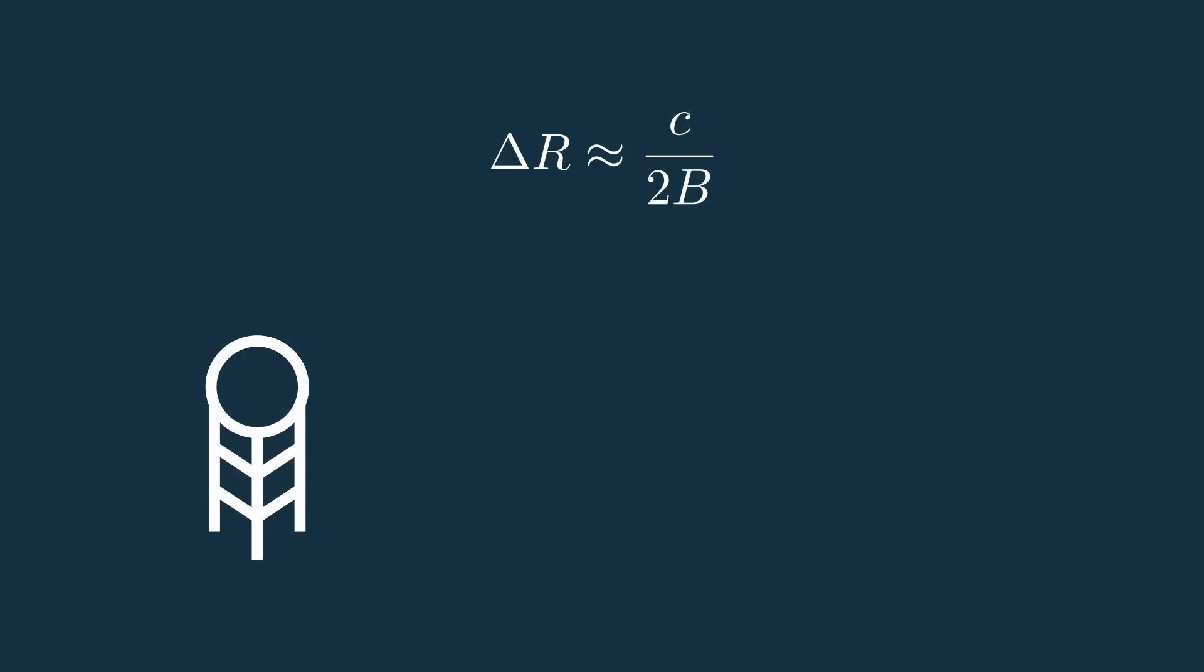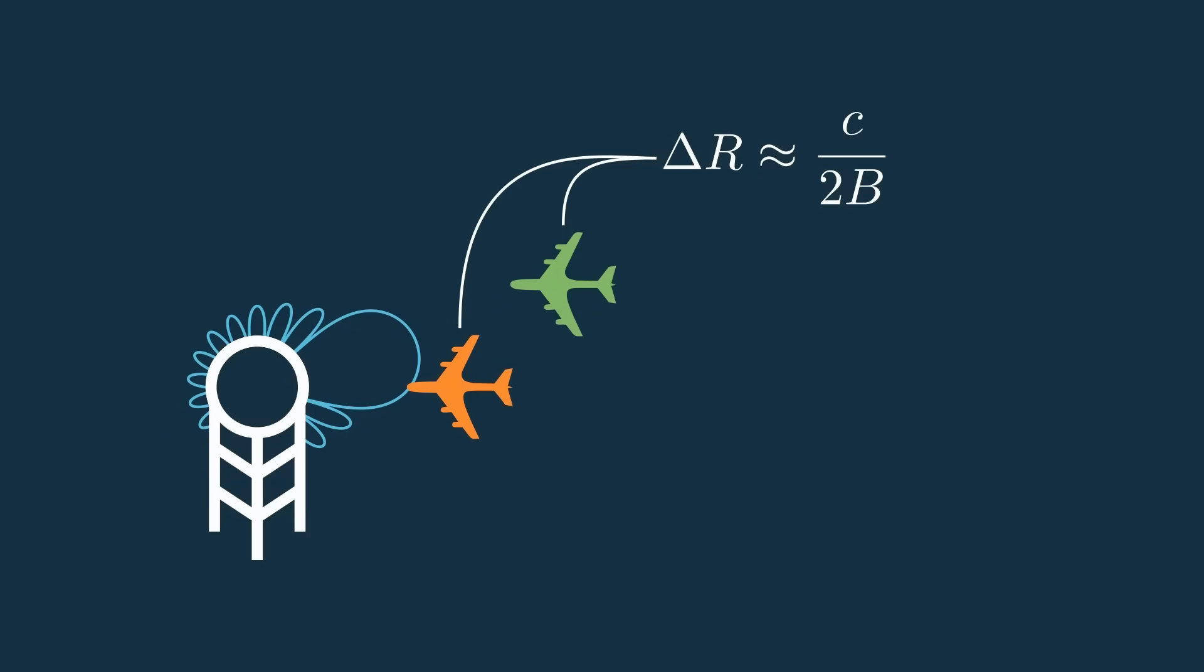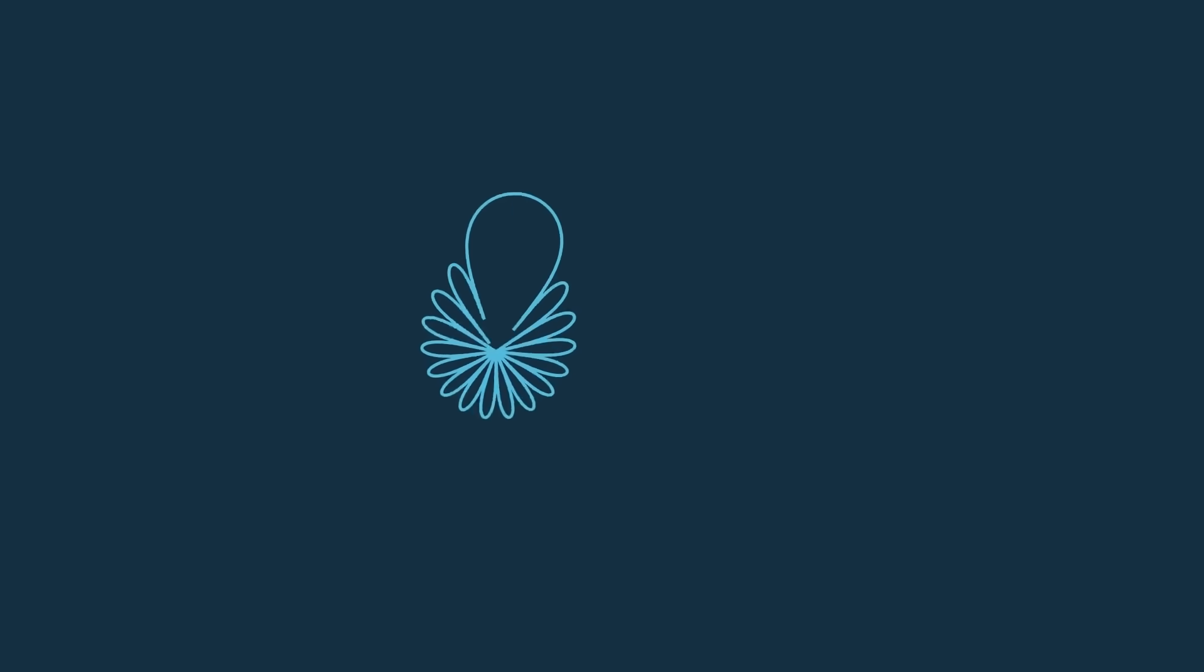If we look back at the beam we're transmitting though, we now know how close in range to one another these targets can be. But what about to the left and the right? Or in other words, along theta?